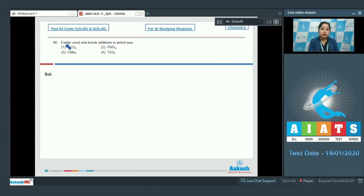Moving to the next question, the earlier used anti-knock additive in petrol was PbCl4, PbEt4, C-methyl 4, or TiCl4?